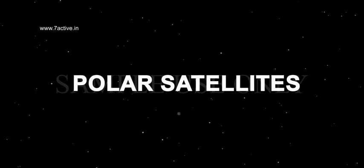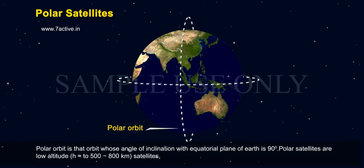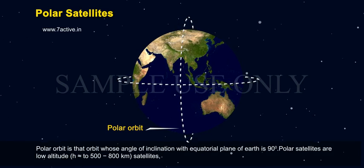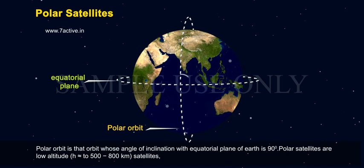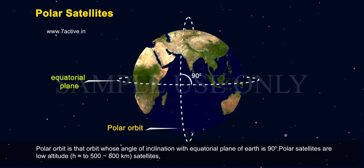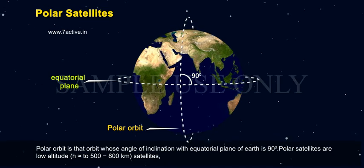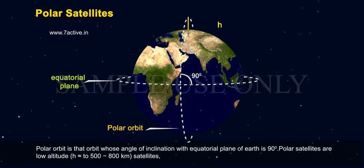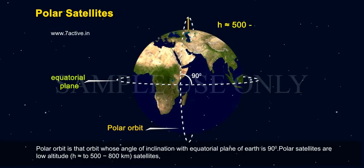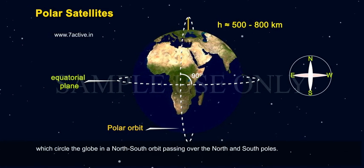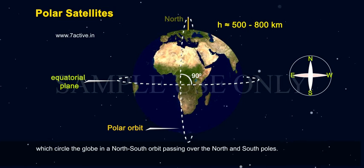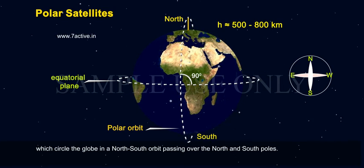Polar orbit is an orbit whose angle of inclination with the equatorial plane of Earth is 90 degrees. Polar satellites are low altitude satellites, at heights of 500 to 800 km, which circle the globe in a north-south orbit passing over the north and south poles.